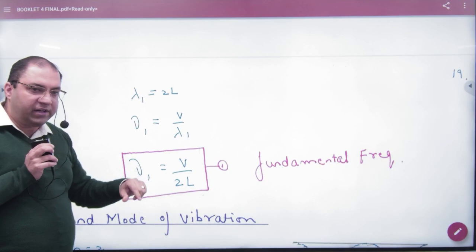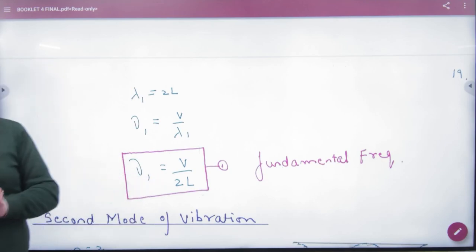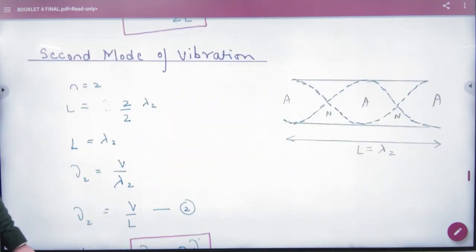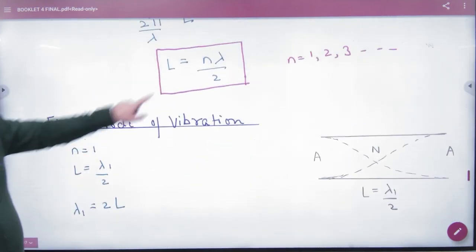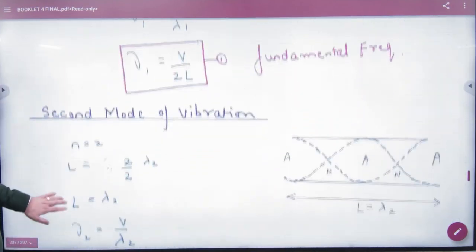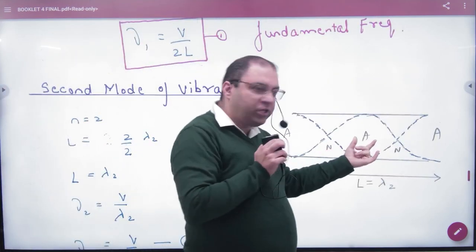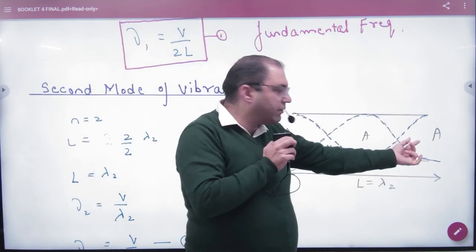Next n is equal to 2 case. When we put 2 in the formula, 2 from 2 cancel, then what happened? L is equal to lambda. Lambda means two loops. Two loops are like this, one loop is called lambda by 2.